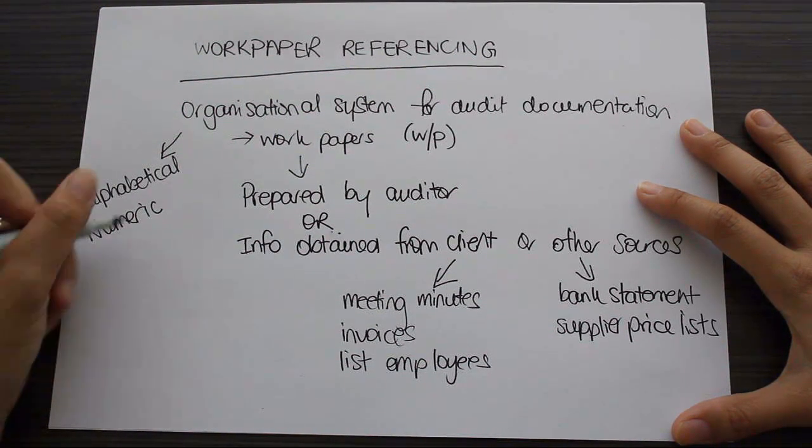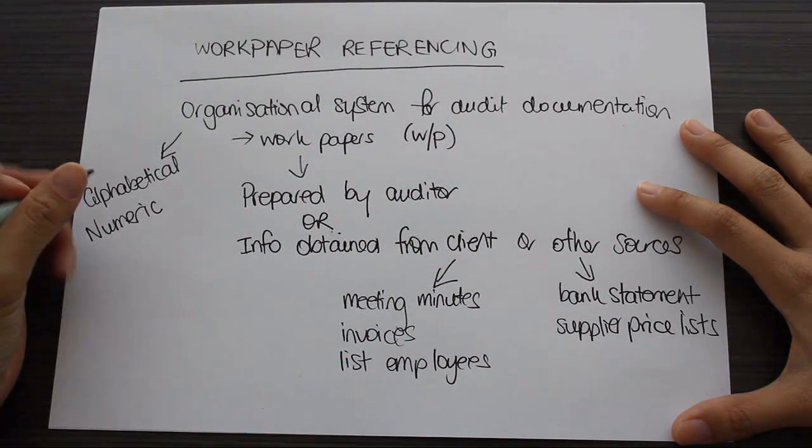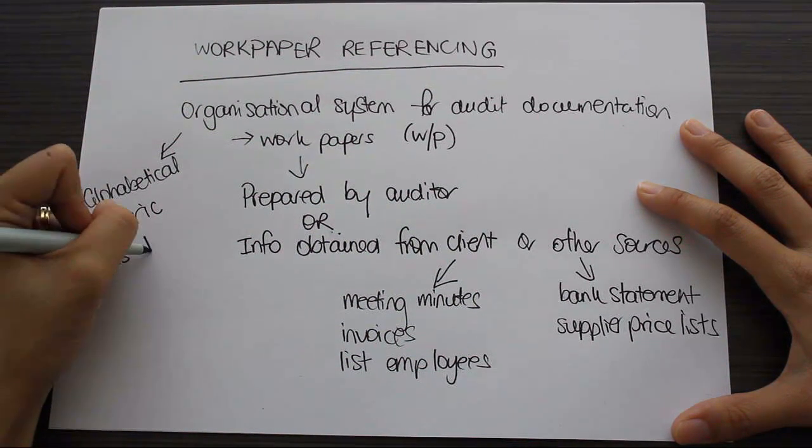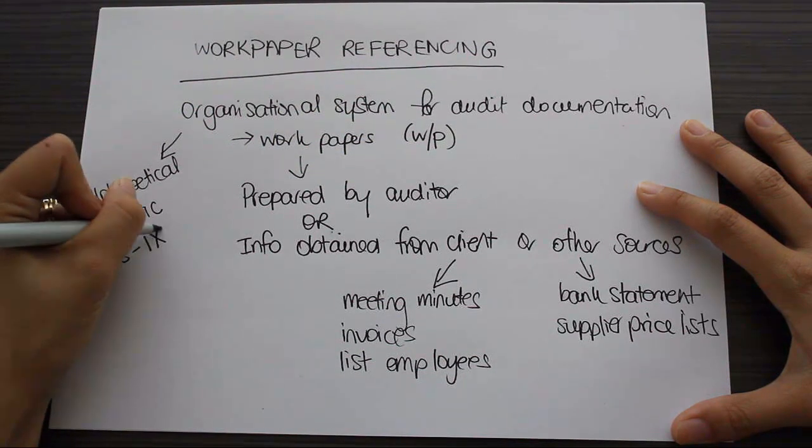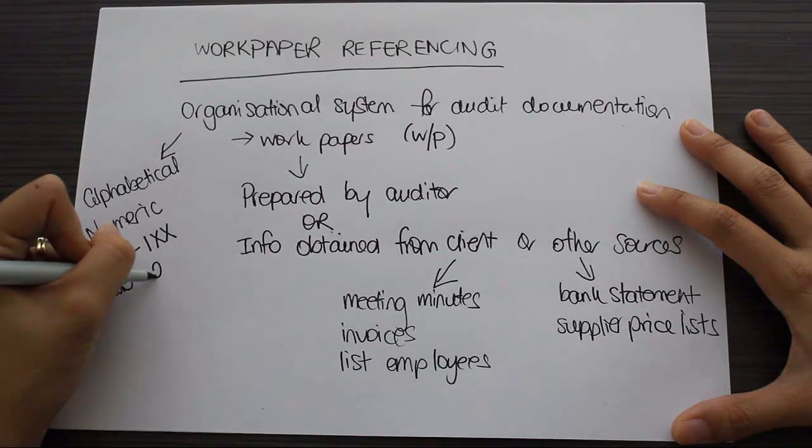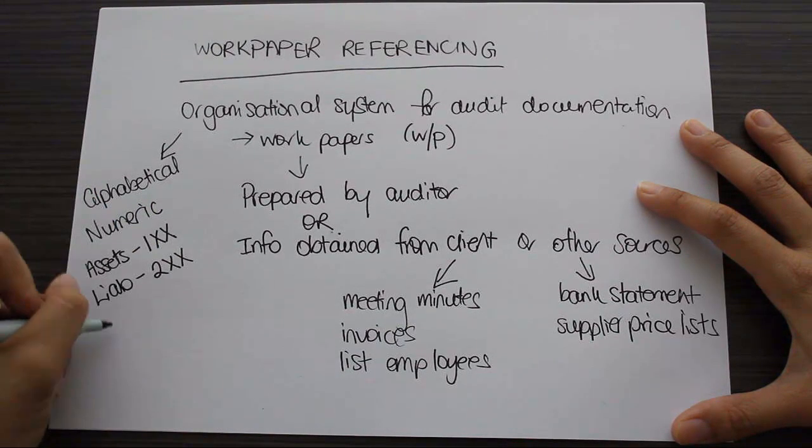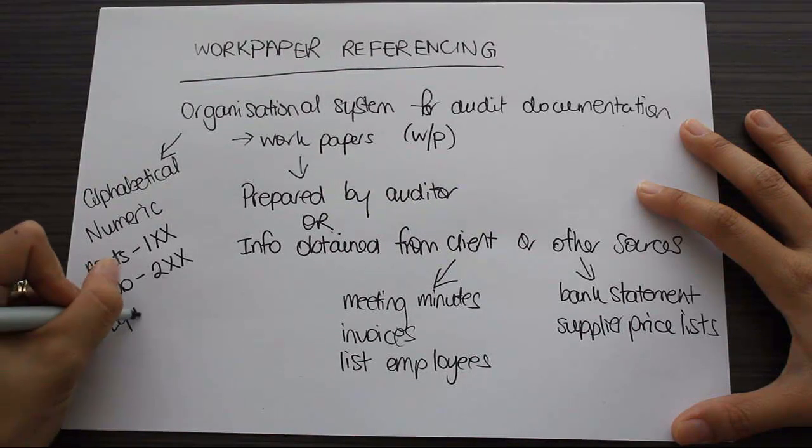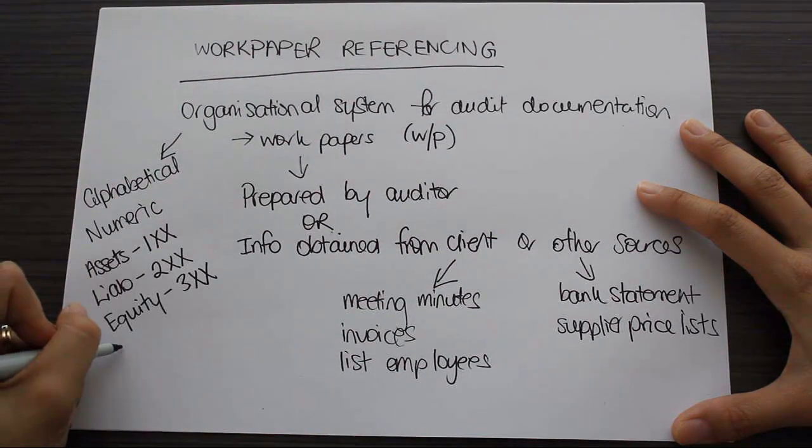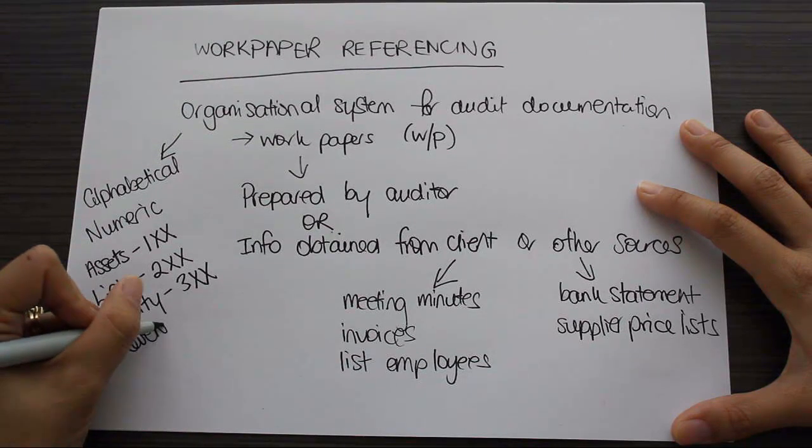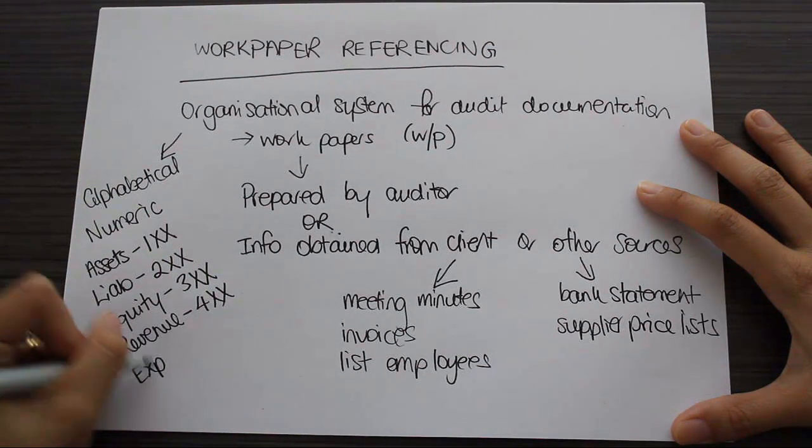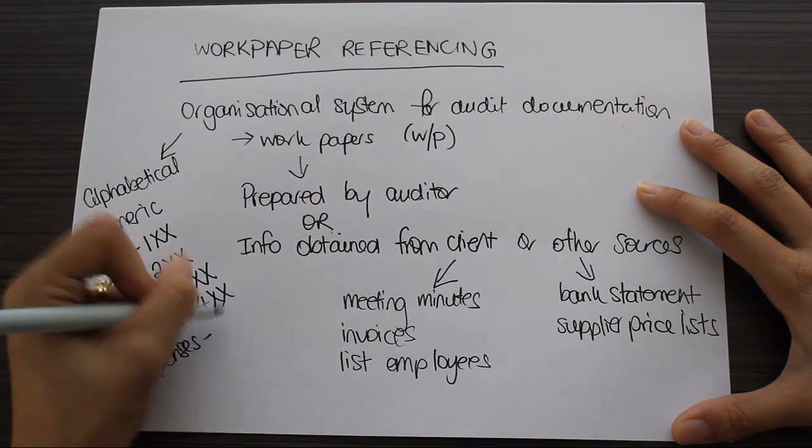So a common one might be using assets start with the number 100. Liabilities might be 200. Equity might be 300. Any revenue items could be 400. And any expenses could be 500.